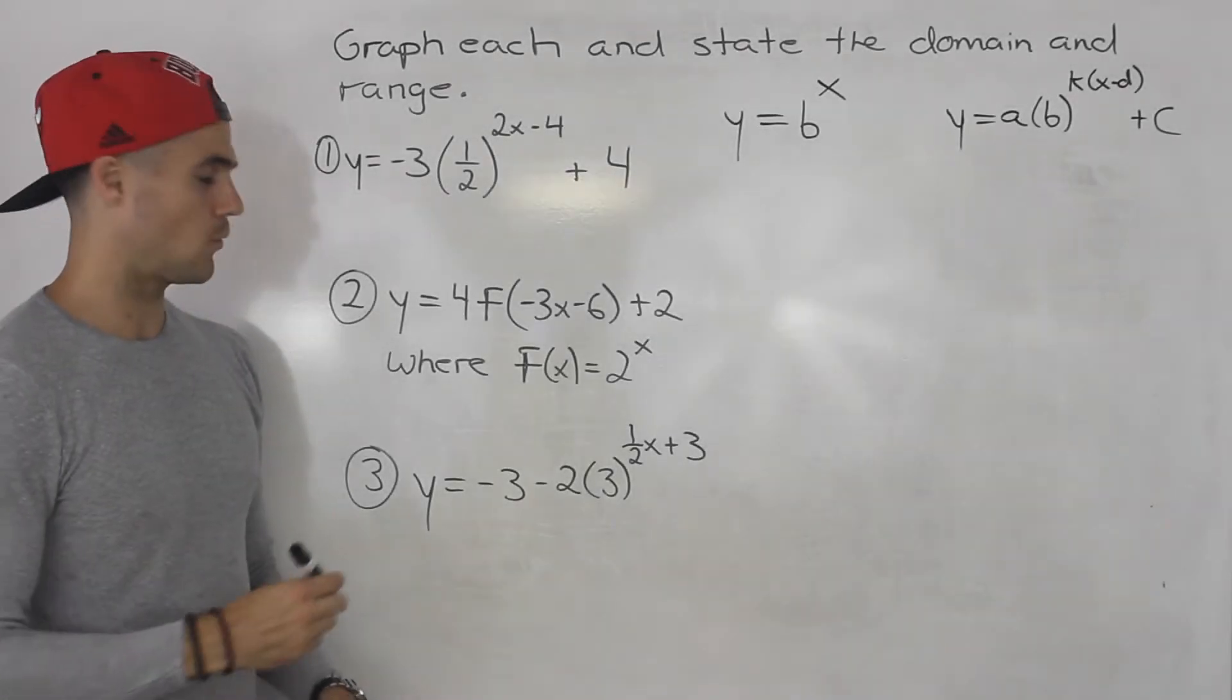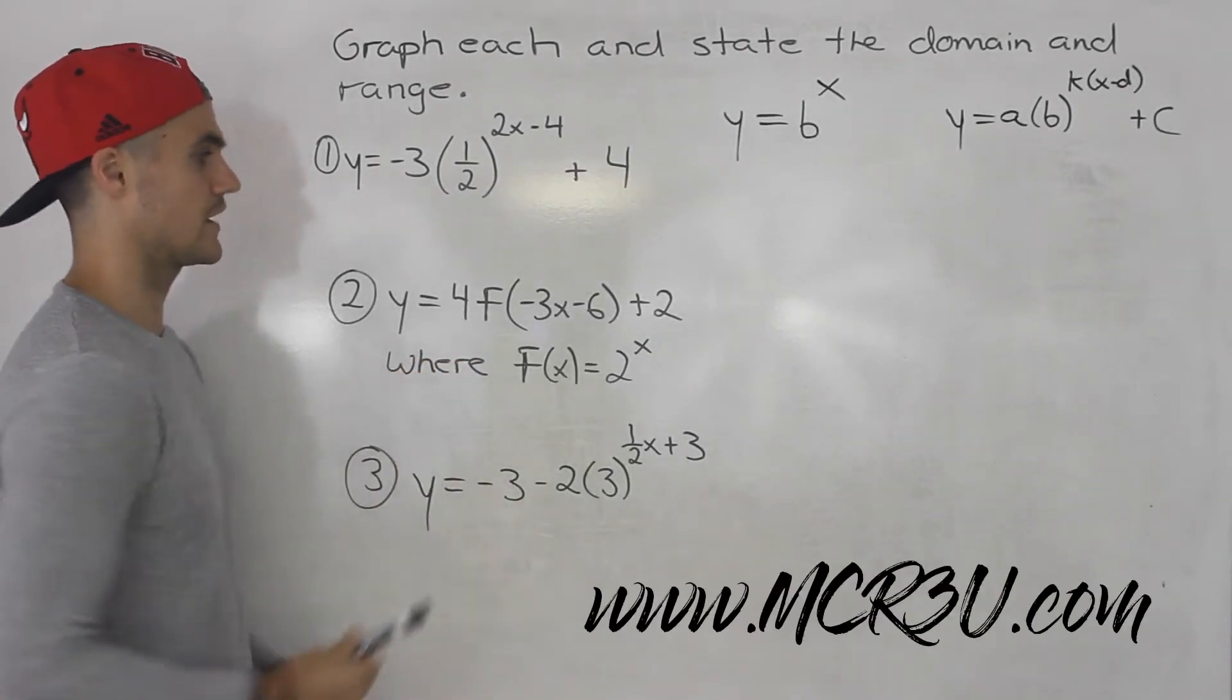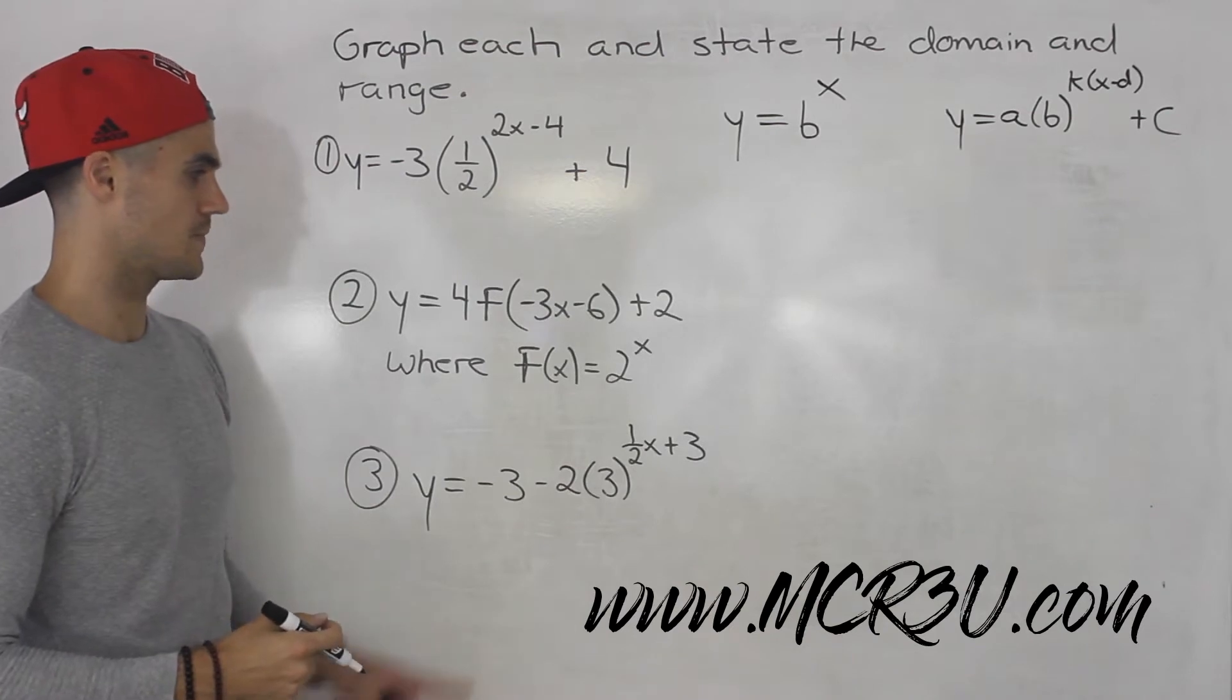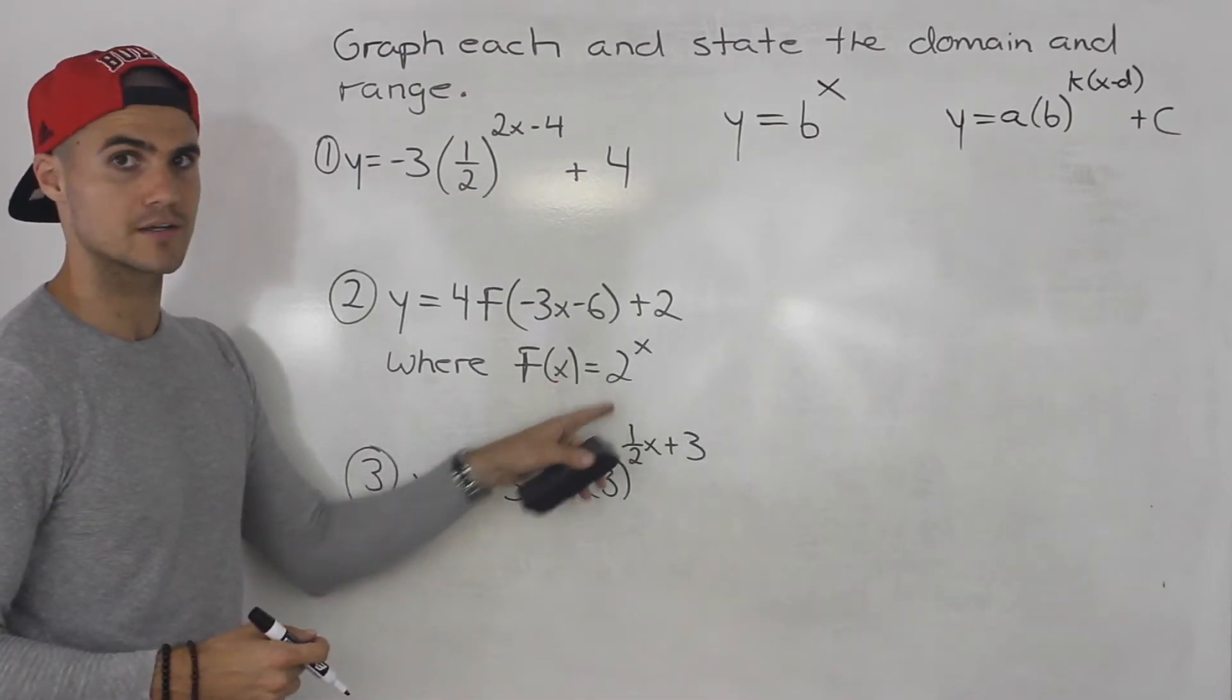So moving on to number two we got y equals 4f of negative 3x minus 6 plus 2, where f of x is equal to 2 to the power of x.